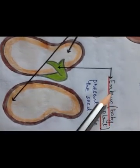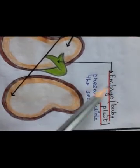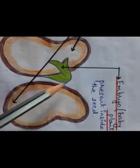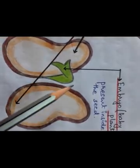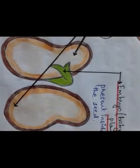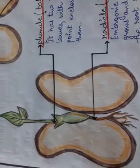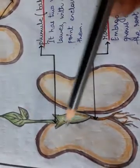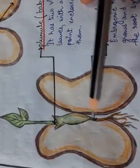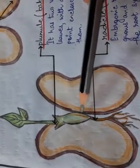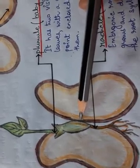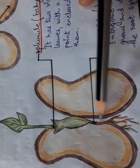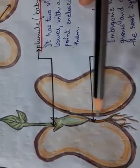Now we'll look at the most important part of a seed: the embryo, which is the baby plant present inside the seed. The embryo has two parts: the radicle and the plumule. The embryo has everything that a seed needs to grow into a new plant. As the seed grows, the radicle produces the first root.